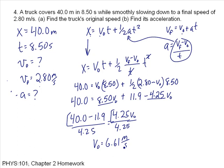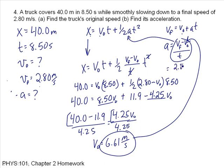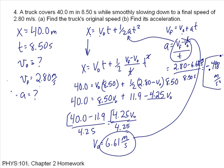Now that I know the initial speed, I plug it in to find acceleration: A equals 2.80 minus 6.61 divided by 8.50, which gives minus 0.448 meters per second squared. The acceleration is negative because the truck's speed is positive but it's slowing down.